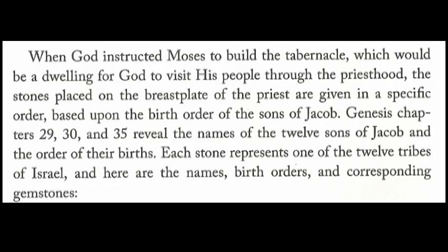When God instructed Moses to build the tabernacle as a dwelling place for God to visit his people through the priesthood, the stones placed on the breastplate of the high priest are given in a specific order based on the birth order of the sons of Jacob. Genesis chapters 29, 30, and 35 reveal the names and birth order of the 12 sons, each stone representing one of the 12 tribes of Israel.